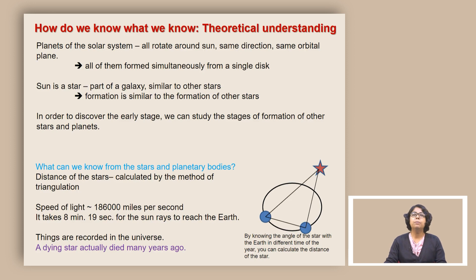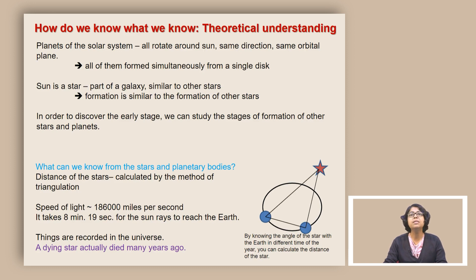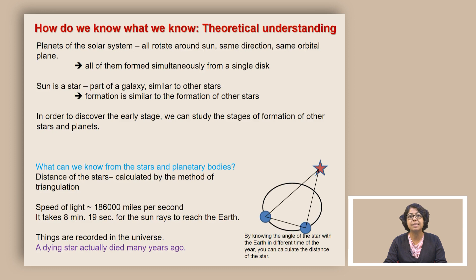When it comes to the beginning of the planet or the solar system or the universe, there are various ways we can try to understand what happened in the long past when we were not observing it. One important part is our theoretical understanding. Some observations also help. For example, planets in the solar system all rotate around the sun in the same direction on the same orbital plane — these are indications that all of them formed simultaneously, probably from a single disk. The sun is a star, part of a galaxy similar to other stars, and therefore we can infer that its formation is similar to the formation of other stars.